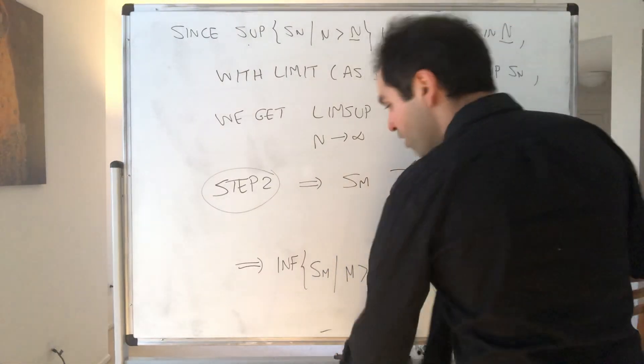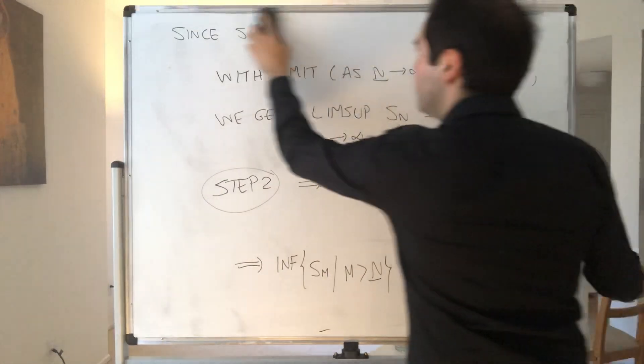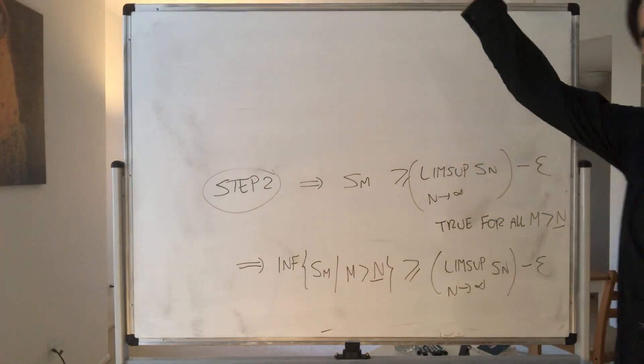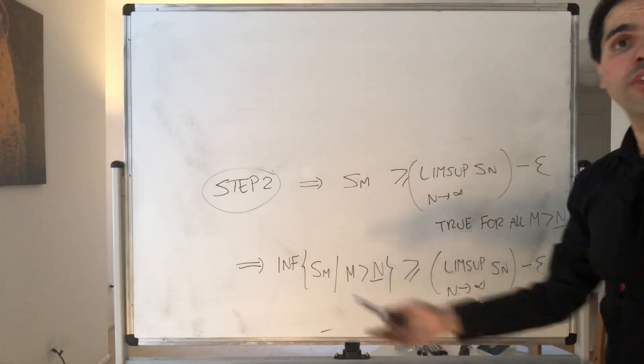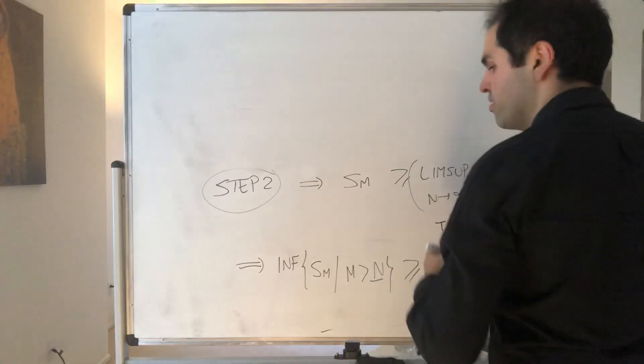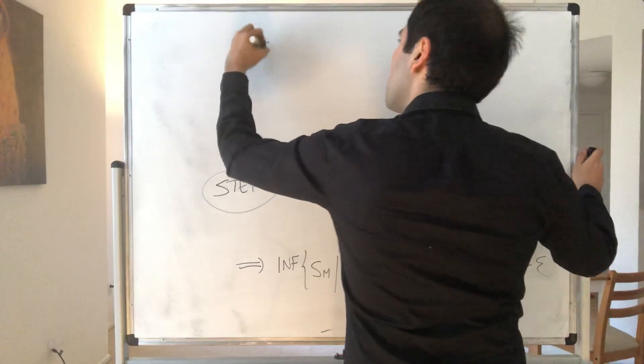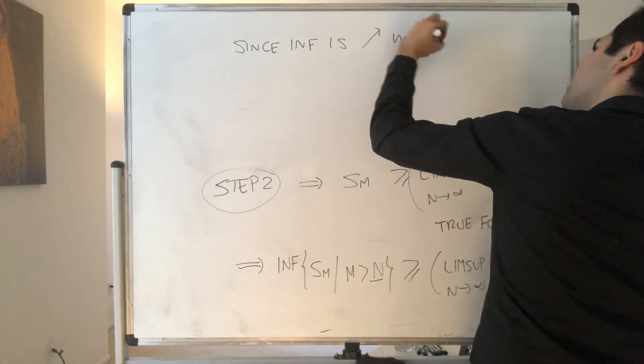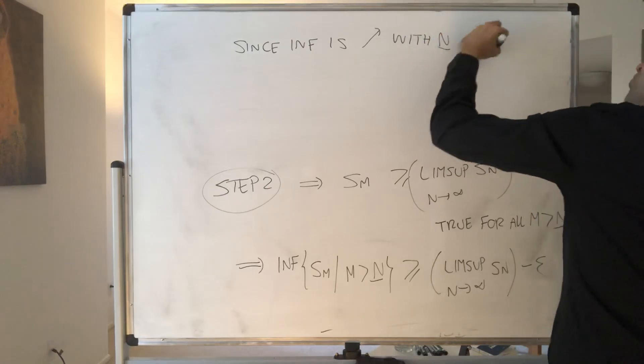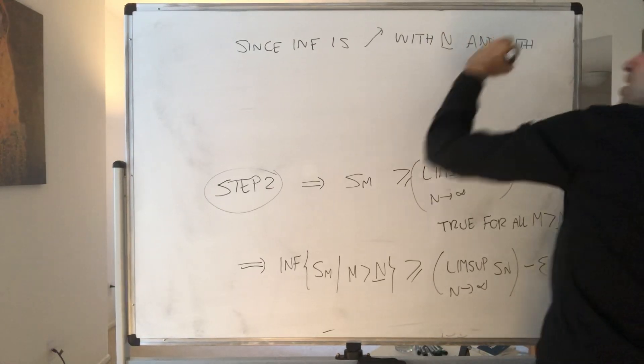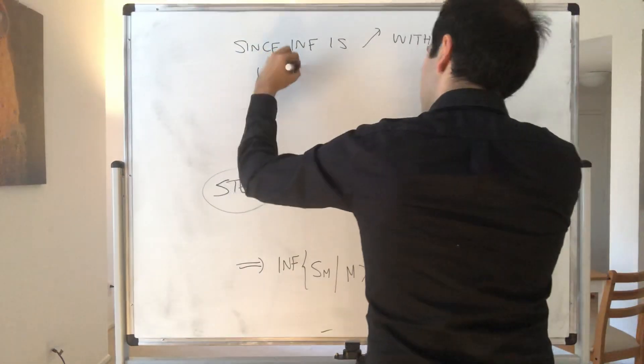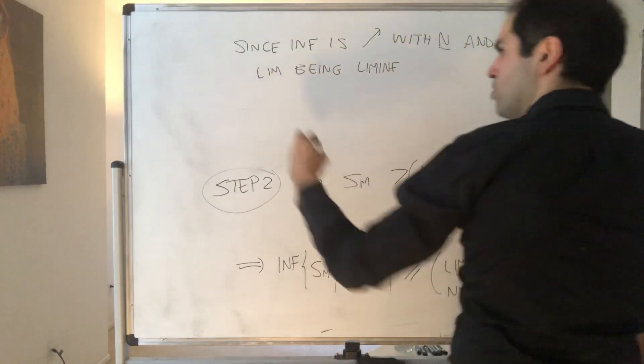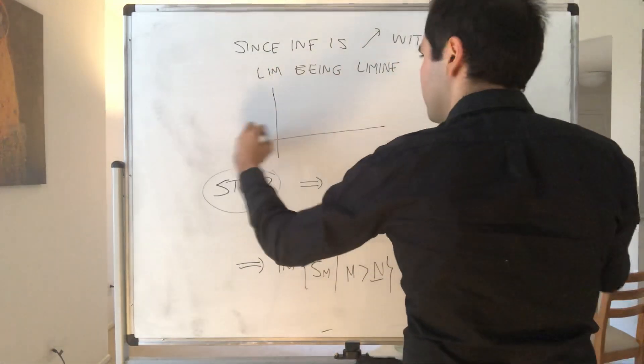But now, here we actually have the opposite phenomenon happening. Before, the supremum was decreasing, and now the infimum is increasing. So since the infimum is increasing with capital N, with limit being the lim inf, if you want, just a little picture, this is your sequence, and you're looking at the smallest value.